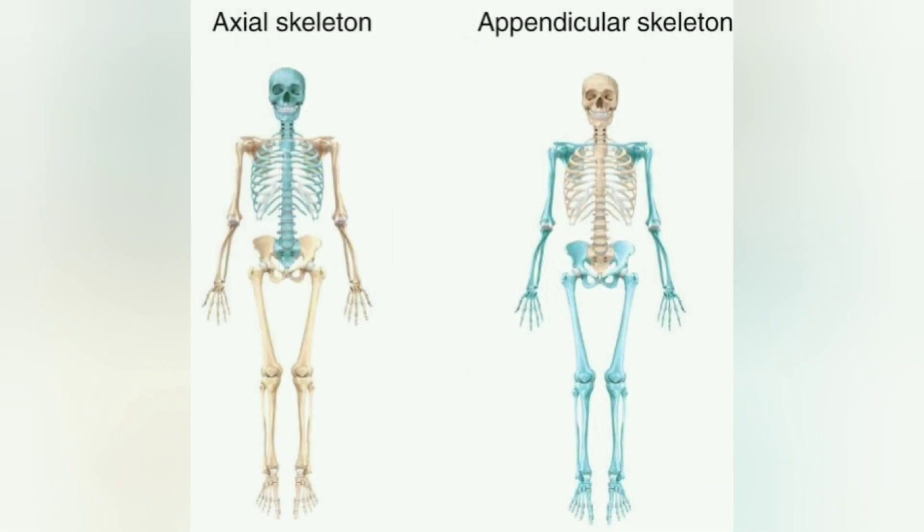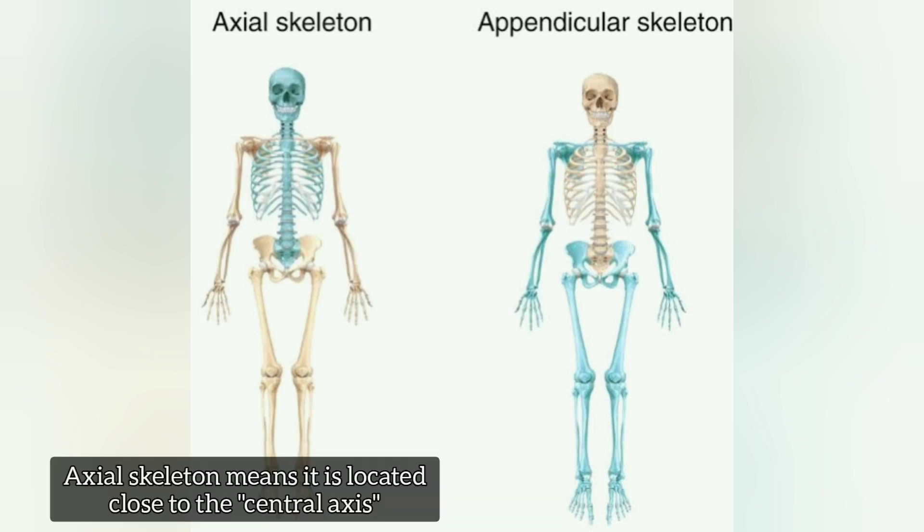One is the axial skeleton, and one is the appendicular skeleton. The axial skeleton refers to the central axis of the body — that is the name of the axial skeleton.